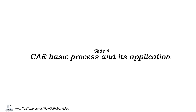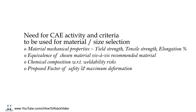Slide 4: CAE basic process and its application. Before preparing this slide, we should be aware of the need for CAE activity and the tight area to be used for material and size selection. We should be aware of material mechanical properties — yield strength, tensile strength, and elongation percent. We should also be aware of equivalence of the chosen material with the base recommended material, and the chemical composition of the material selected, the buildability risks, the proposed factor of safety, and the maximum deformation which can be allowed.